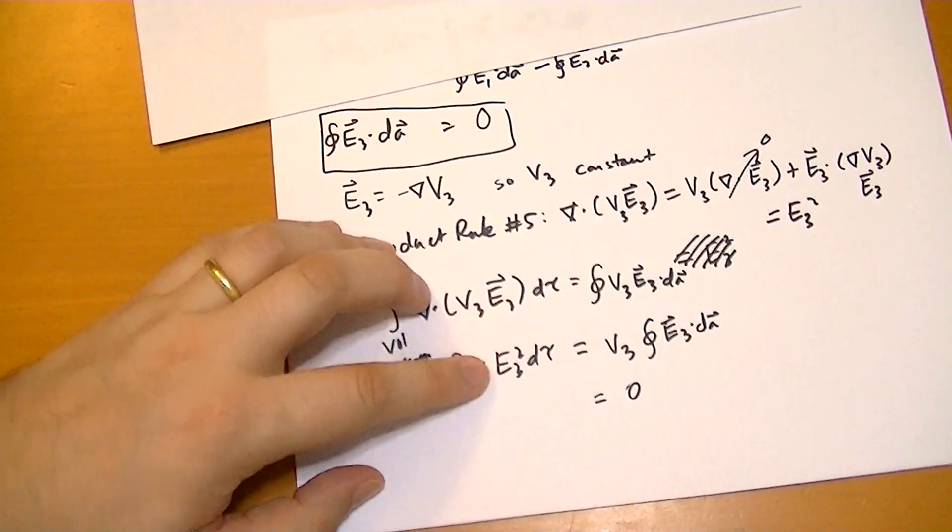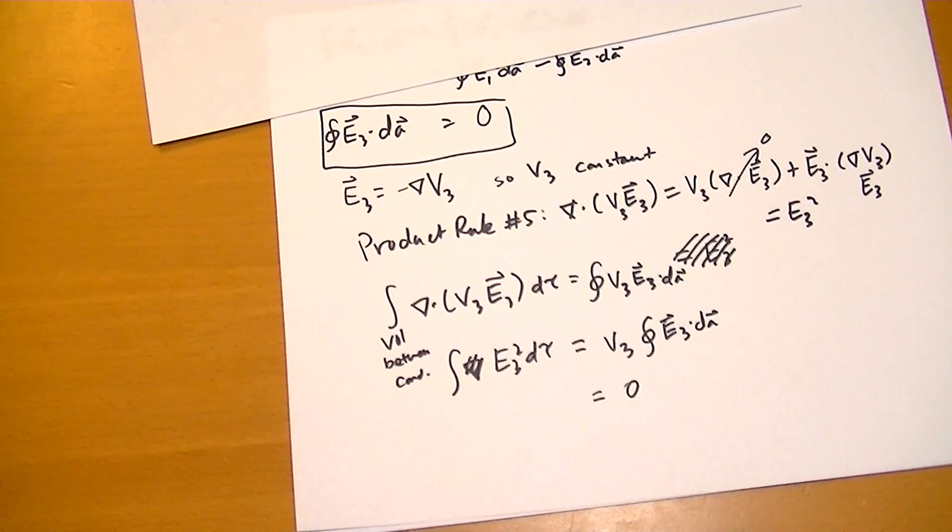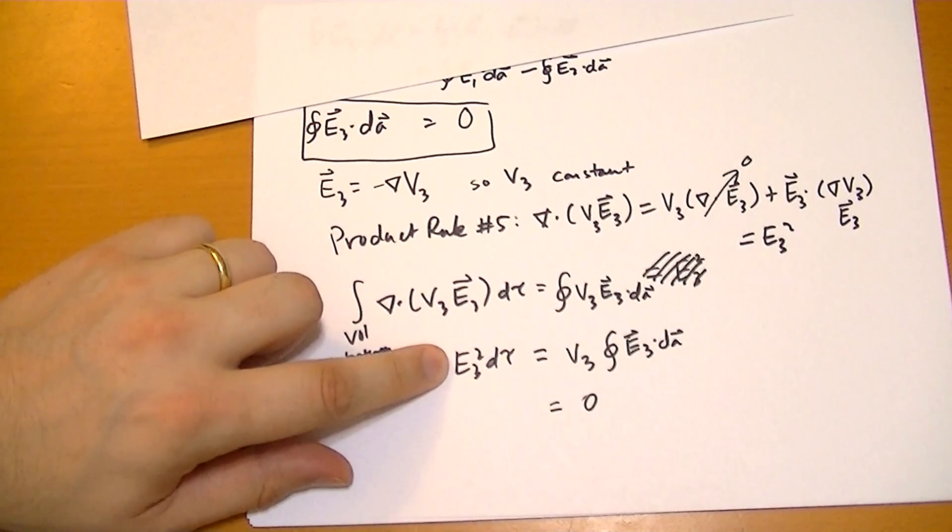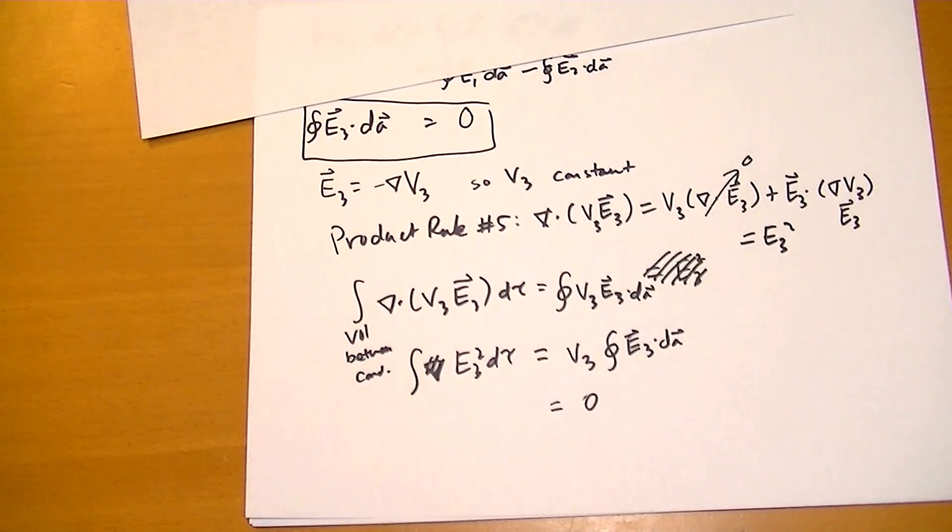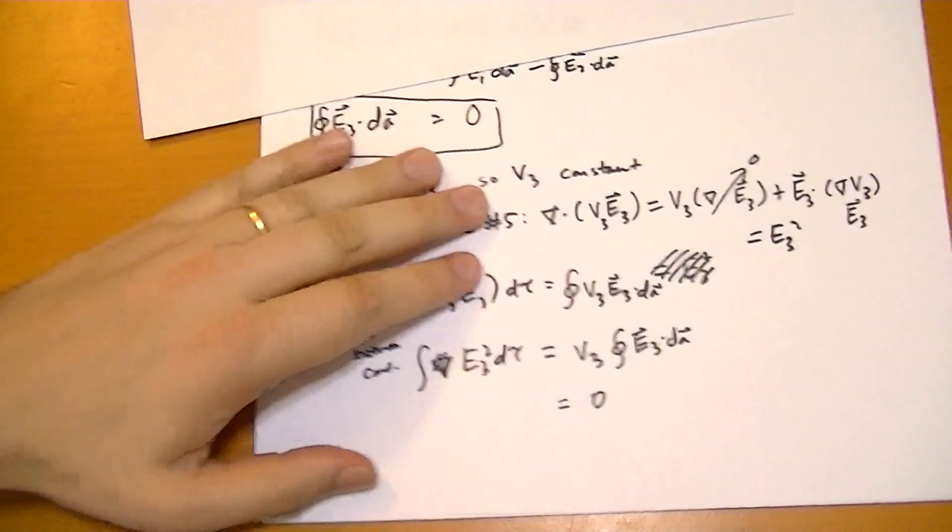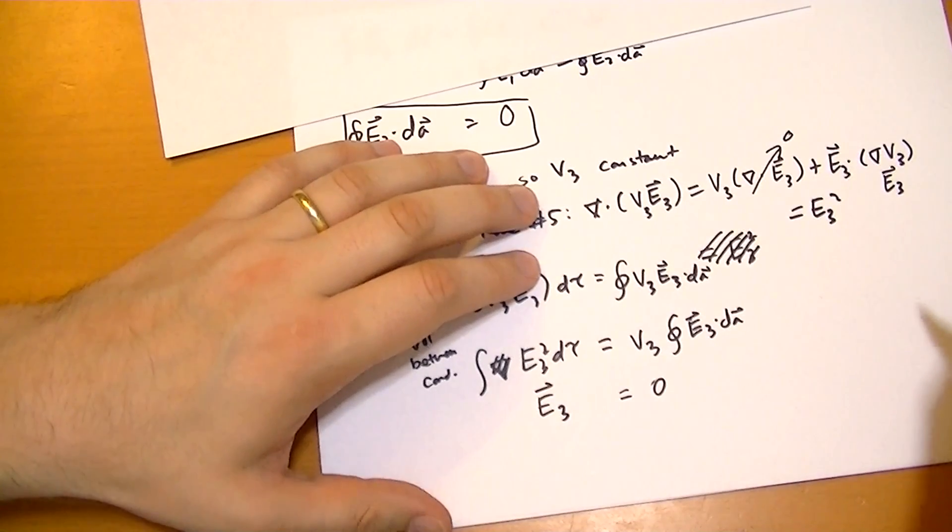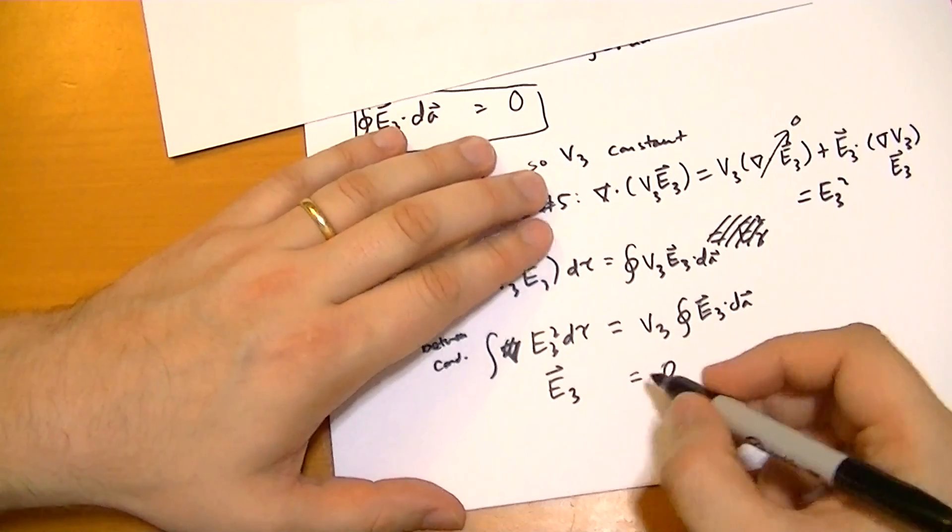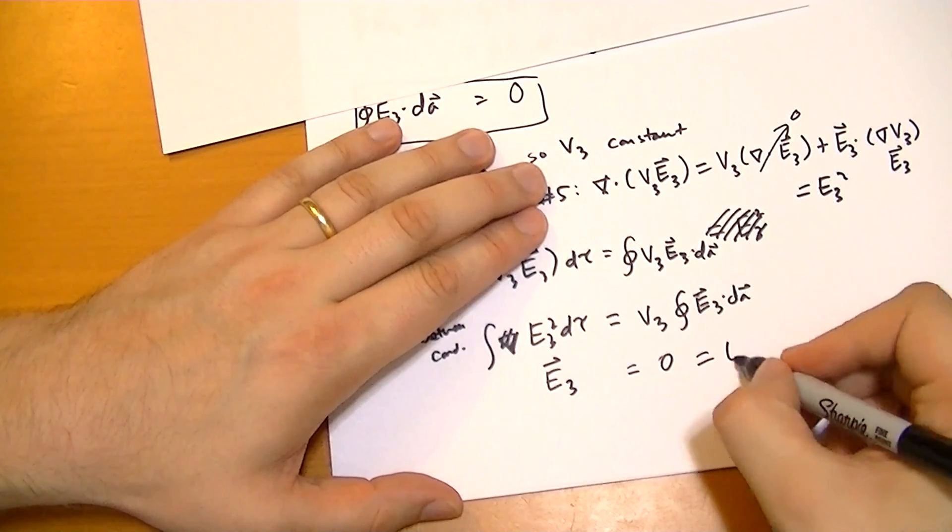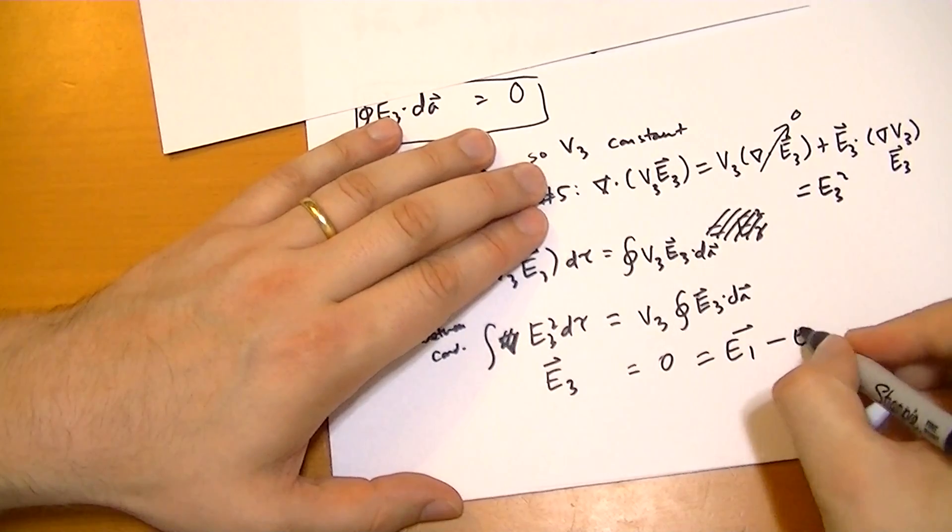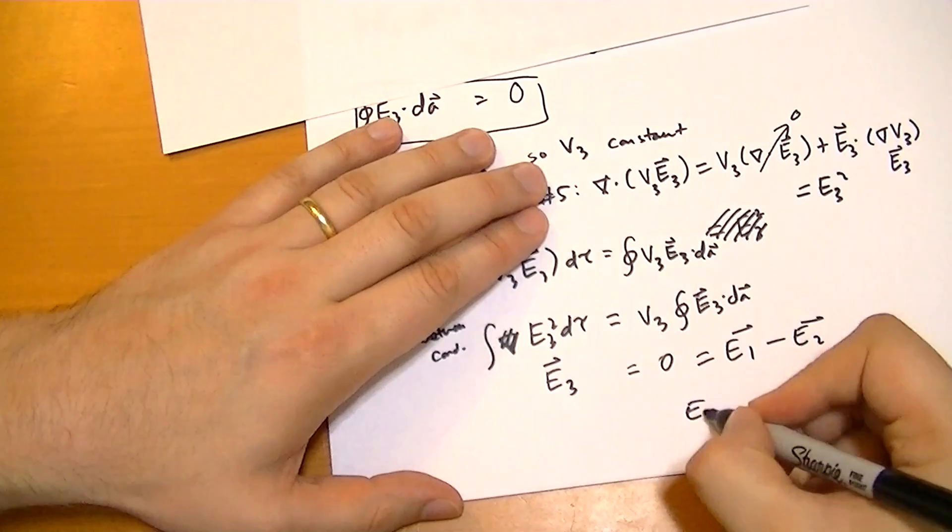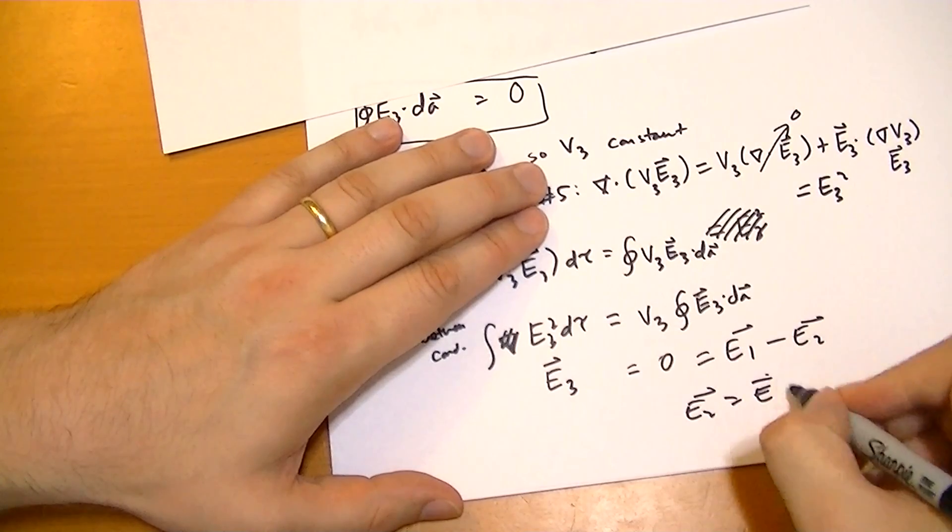Well, you can have an integral equal to zero if some places it's positive and some places it's negative in equal amounts. But since this is the square of a vector, it's always going to be positive, so it has to be always greater than or equal to zero. And so we're left to conclude that E3 must be equal to zero as well, everywhere. And since E3 equals zero, well then zero equals E1 minus E2, and so E2 vector is equal to E1 vector.